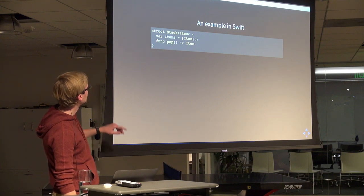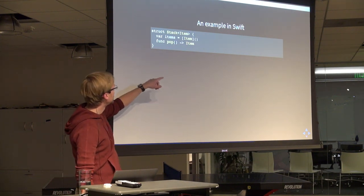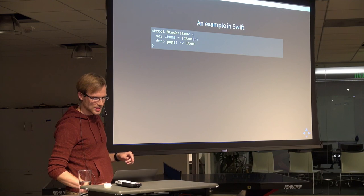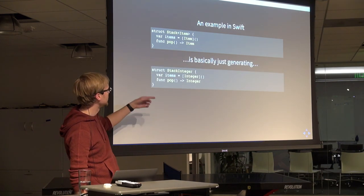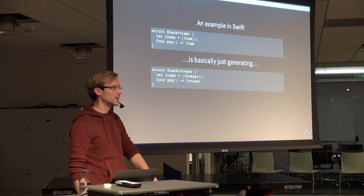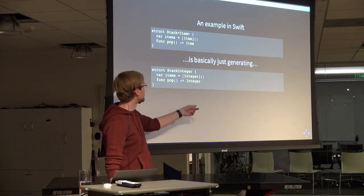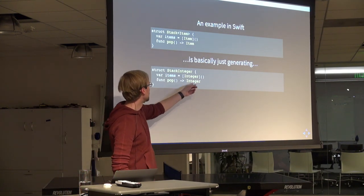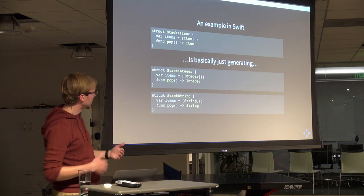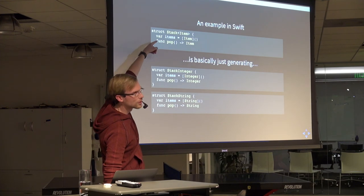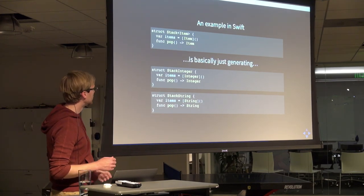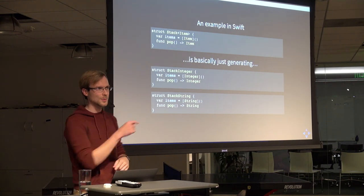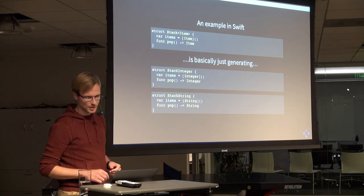This is a pure Swift generic. We have a stack of item, and item is the generic type — the associated type. We don't actually know when you write this what type item is going to wind up being. Essentially what happens is the Swift compiler generates, every time you use it, a new version of that for whatever type it is. So if I want a stack of integers, I just say give me a stack of integers, and it generates a strongly-typed stack of integers. Same deal for strings — I get these two classes for free but I really only wrote that one, which is really cool. You get type safety when you don't even know what the type's going to be.